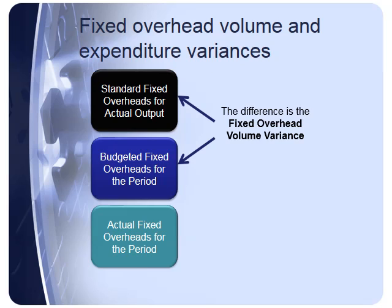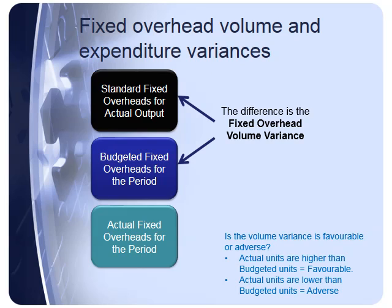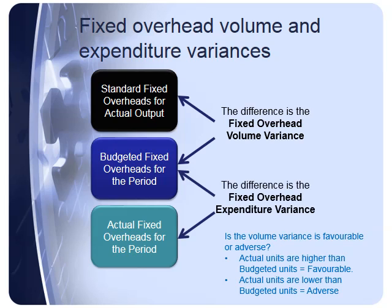It's worthwhile knowing how we calculate whether the overhead volume variance is favourable or adverse. If the actual units produced were higher than the budgeted units, that gives us a favourable volume variance. Whereas if the actual units are lower than the budgeted units, that results in an adverse variance. The fixed overhead expenditure variance is simply budgeted fixed overheads less actual fixed overheads. If I've spent more in reality than my original budget, that gives me an adverse variance, and a favourable variance is where I've spent less than originally budgeted.